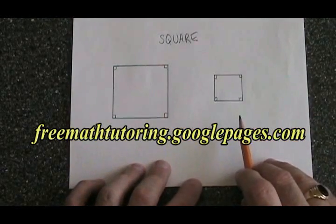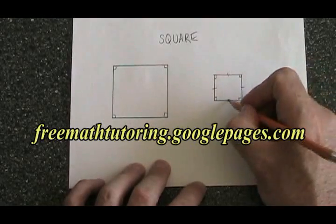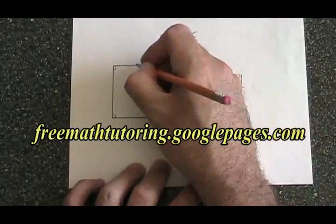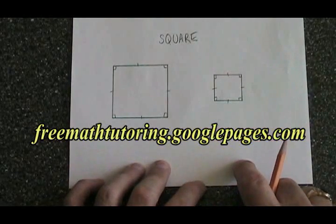A square has four equal sides. We can notate this by doing this. This is notation that shows us that the sides are equal in length.